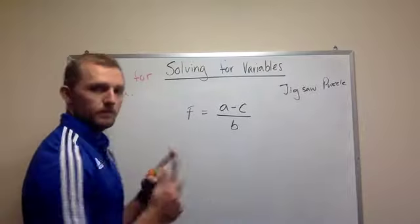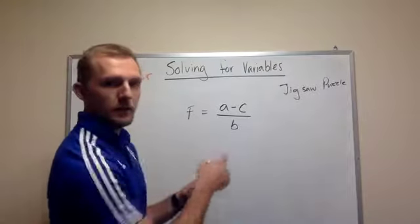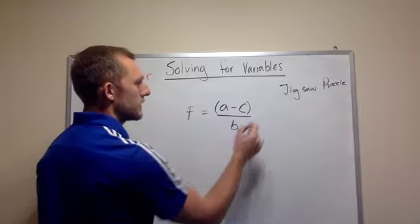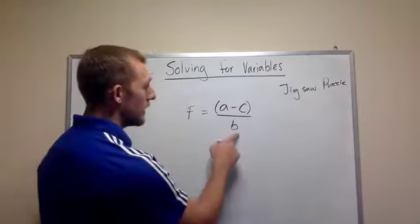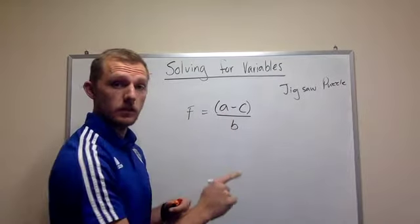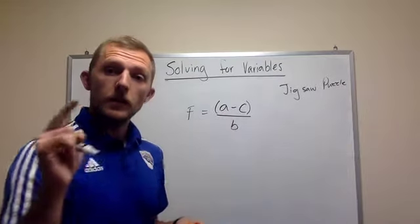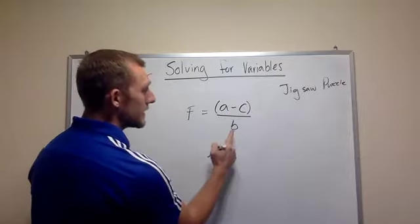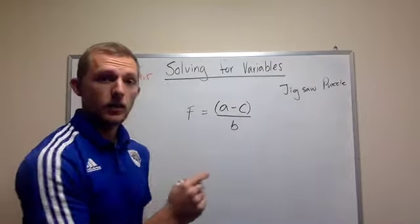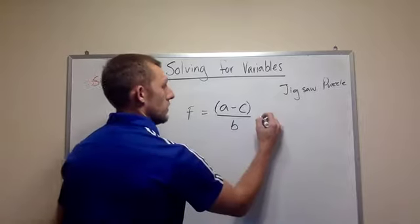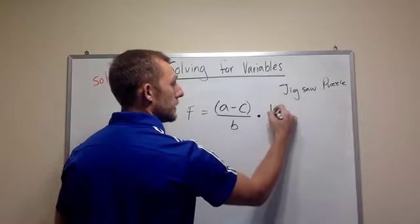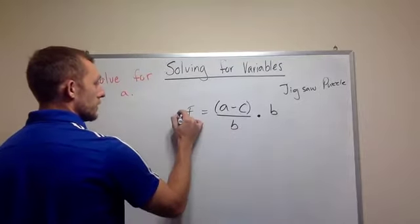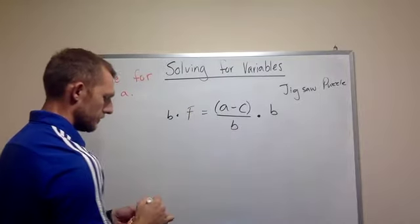Well, up here, this A minus C is actually in parentheses because this B is distributed to both of them. So instead of subtracting or adding anything over, we need to get this B to the other side. So we multiply times B because B is in the denominator. So multiply times B to both sides.